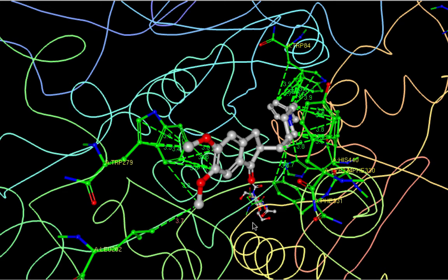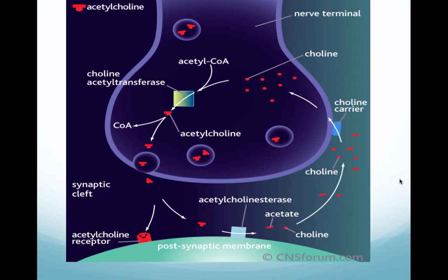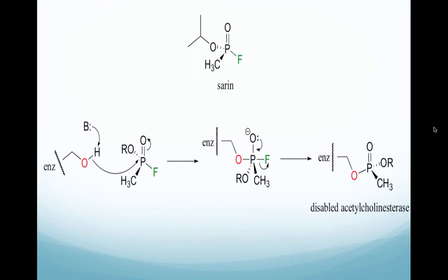Donepezil can also bind to a different location than the active site. In normal neurological function, acetylcholinesterase inhibitors cause too much accumulation of acetylcholine in the synaptic cleft, and this accumulation stops nerve impulses from being transmitted. Organophosphates are extremely toxic to humans as they are irreversible inhibitors of acetylcholinesterase. Some have been used as nerve gases—in particular, sarin, which is shown here, was used during World War I as a chemical weapon.